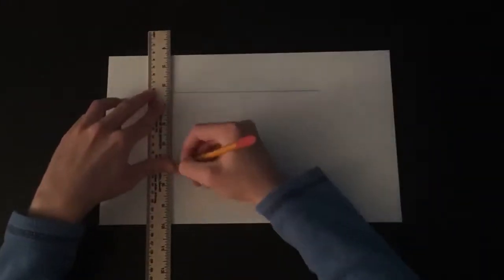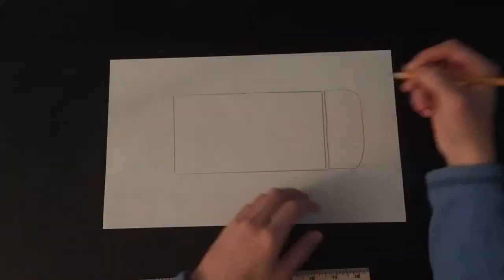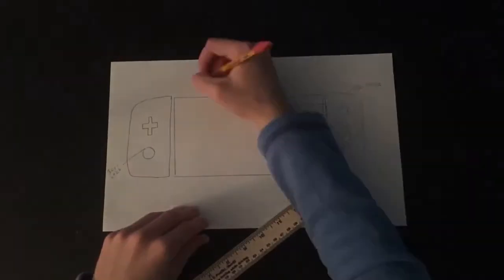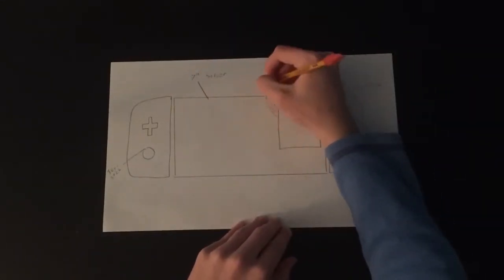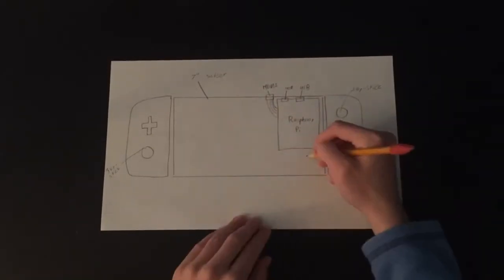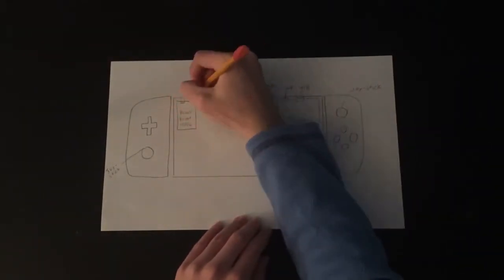So to start off I'm going to sketch what I want the console to look like and it is going to be run by a Raspberry Pi with RetroPie. RetroPie is basically just the operating system to be able to run all these games and the games aren't going to be newer games.